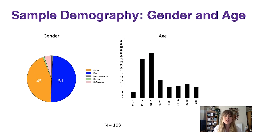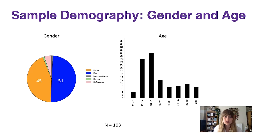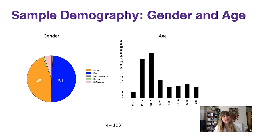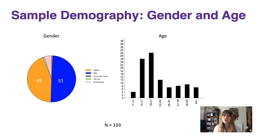First of all, if we look at the sample as a whole, combining all those different countries and different students together, we had 103 students in the sample, with 51 students being male, 45 being female, and the remainder either did not want to say their gender, were not sure of their gender, or did not give a response.